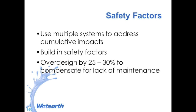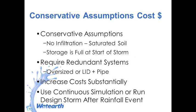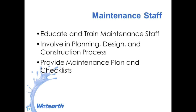Safety factors: if we're putting in features that we think are not going to be maintained or are likely to clog, we may build in redundancy of multiple features. You can also over-design in terms of sizing. Make sure you've got a sheet flow route; if using curb cuts to get stormwater into bioretention, at least a foot wide and ideally with a drop where sediment can fall out. Sometimes agencies want to see conservative assumptions — like assuming the system's full or completely saturated — which will tend to over-design the system and affect the cost savings we want to see with LID.